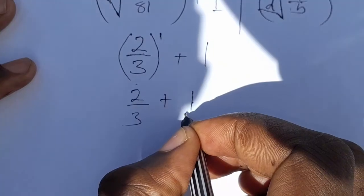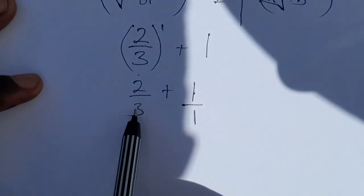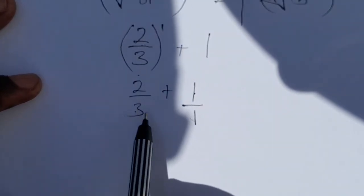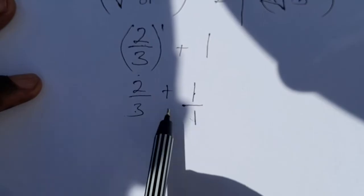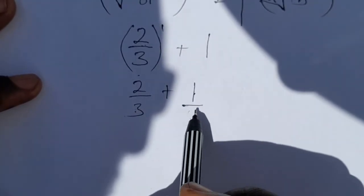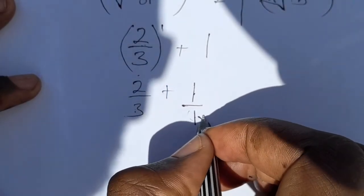And this one here can also be written as a fraction because it's rational. This can be over 1. So you can see that the smaller denominator can go into 3. What you're going to do is that you aim at making this other, the smaller denominator, to be 3. So you're going to do that by multiplying it by 3.